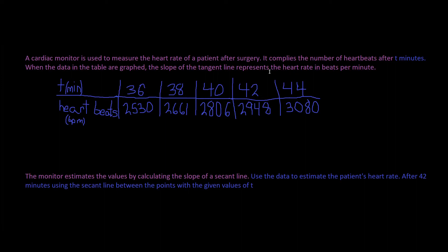A cardiac monitor is used to measure the heart rate of a patient after surgery. It compiles the number of heartbeats after 10 minutes. When the data in the table are graphed, the slope of the tangent line represents the heart rate in beats per minute.